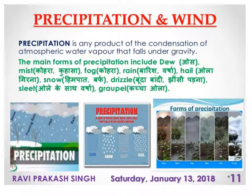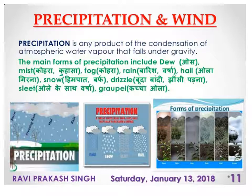Precipitation is any product of the condensation of atmospheric water vapours that falls under gravity. There are different forms of precipitation, which include dew, mist, fog, rain, hail, snow, drizzle, sleet, and graupel.